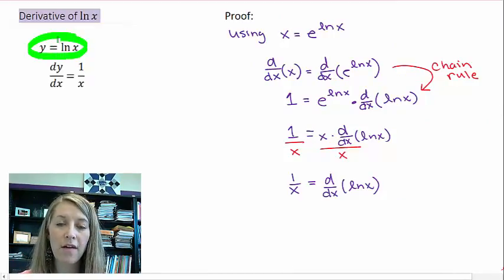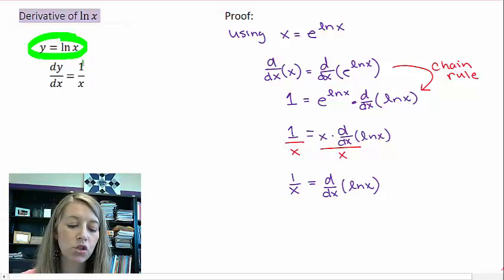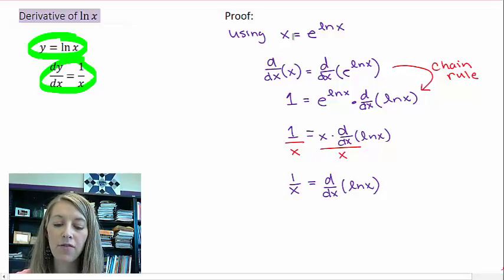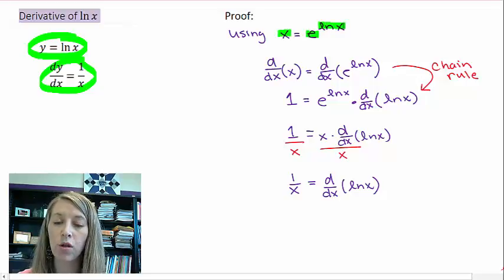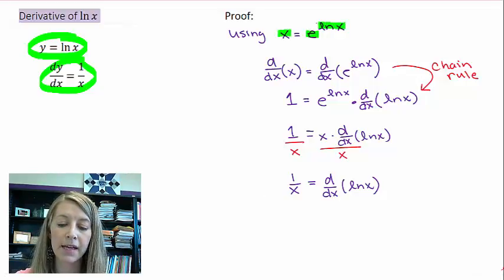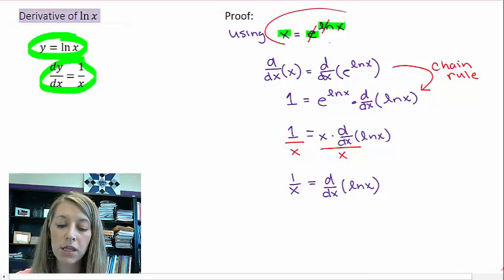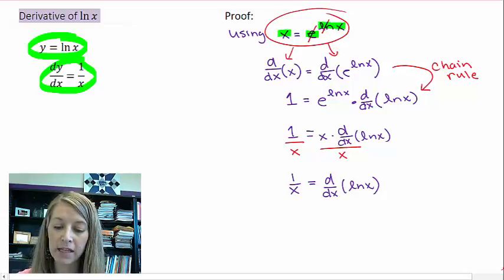If we have the natural log of x, then the derivative of it is 1 over x. The proof of that uses the identity x equals e to the natural log of x, which we know is true because the e and the natural log cancel each other out. So I'm using this and taking the derivative of both sides.